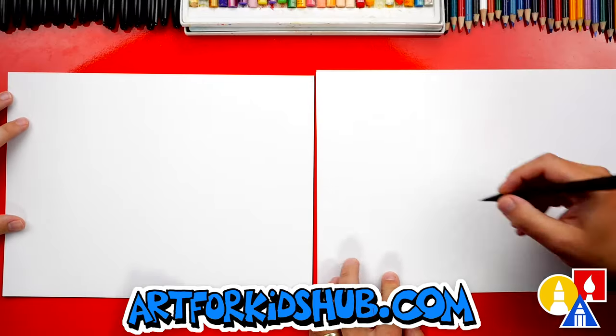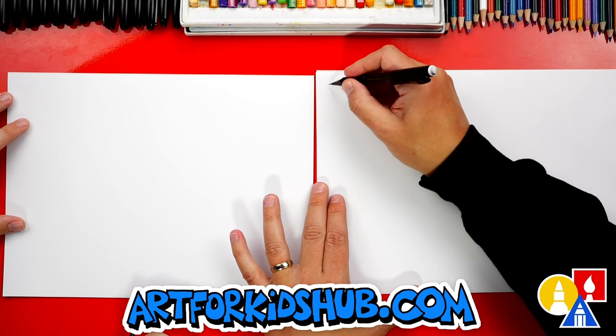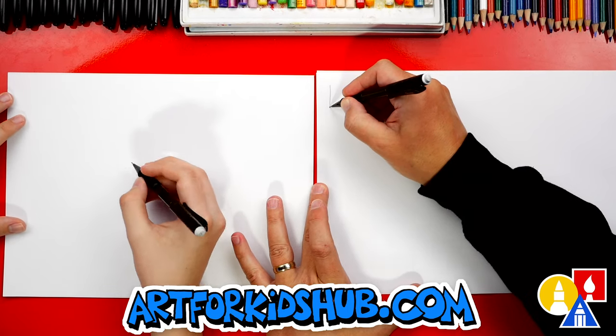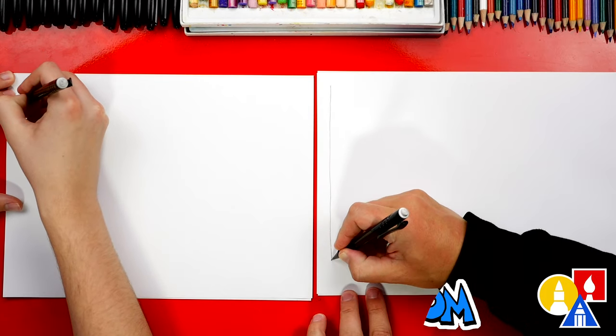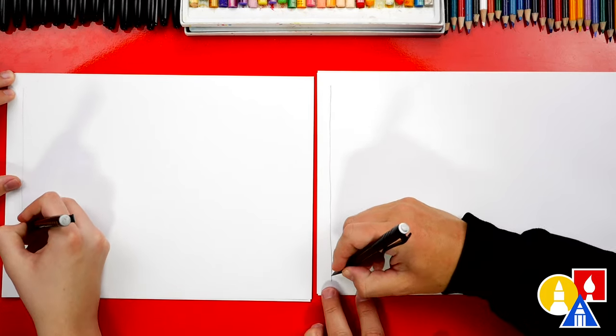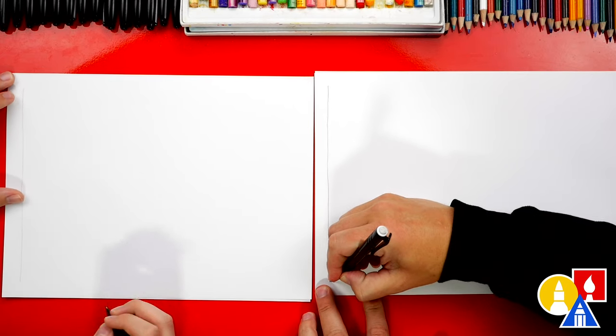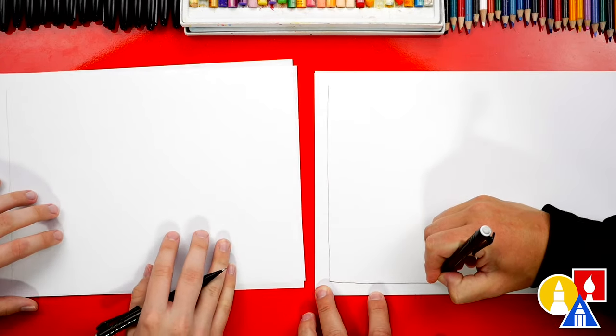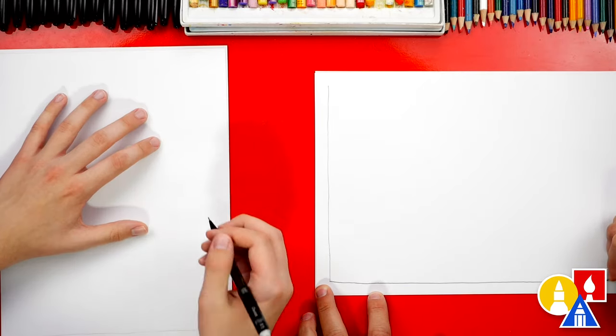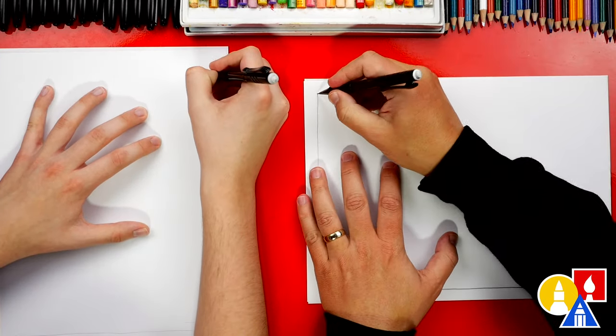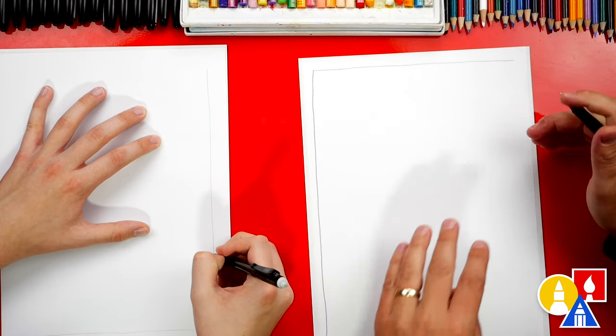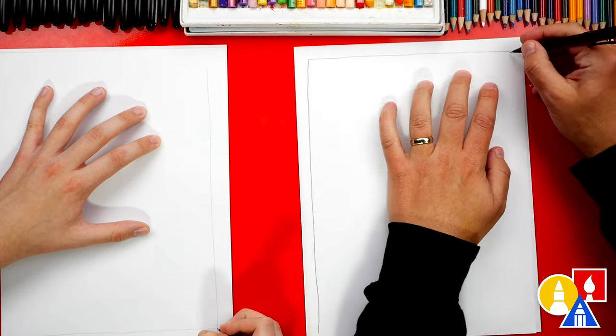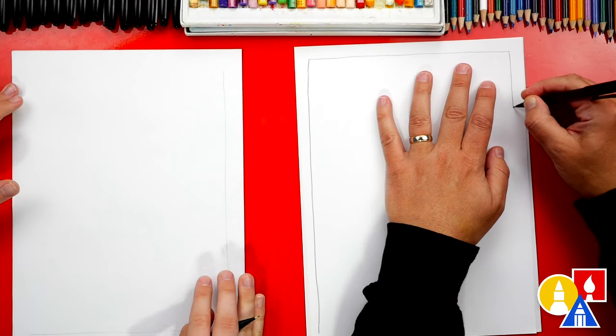Let's first trace around our paper. We're gonna draw a rectangle shape. We'll start up here. This is so it helps so that we don't have to color all the way to the edge of the paper and we're not coloring on our table. We're just gonna trace around our page using our pencils.